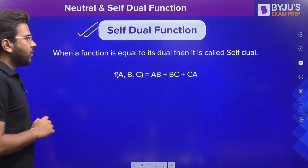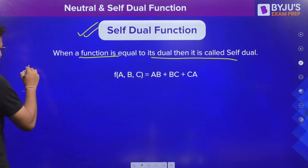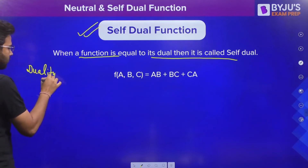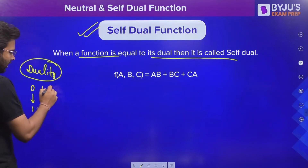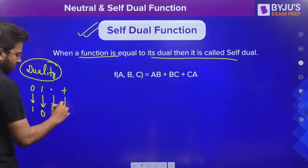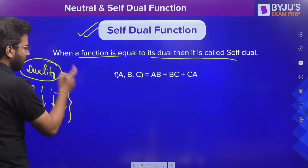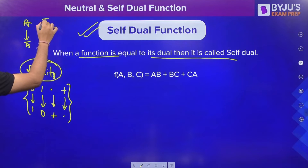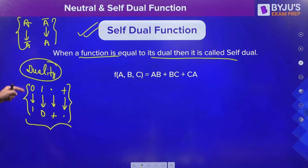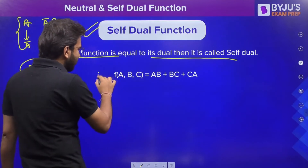Now let's talk about self-dual functions. A self-dual function is when a function is equal to its dual. What is duality? In duality, 0 is converted into 1, 1 is converted into 0, AND operation is converted into OR, and OR is converted into AND. This is different from complement — in complement you have all these, plus a boolean variable is converted into its complement and vice versa. That addition is not in duality. So duality is: 0↔1 and AND↔OR.